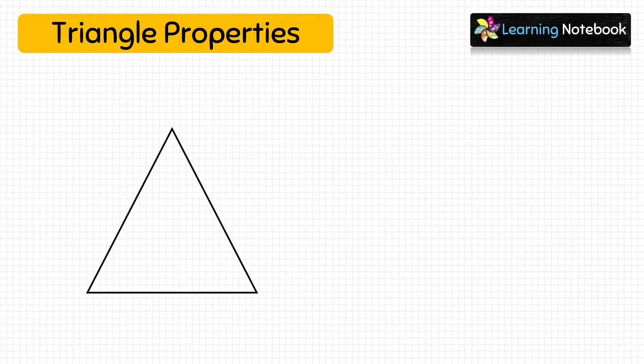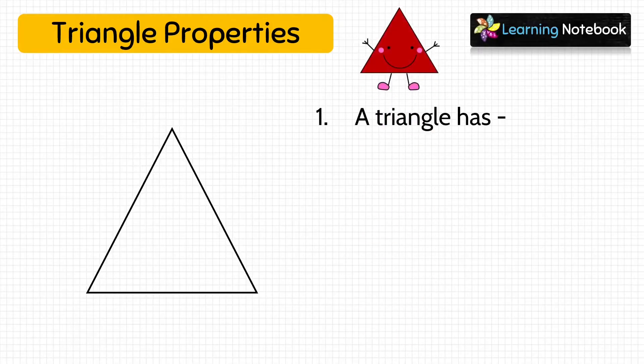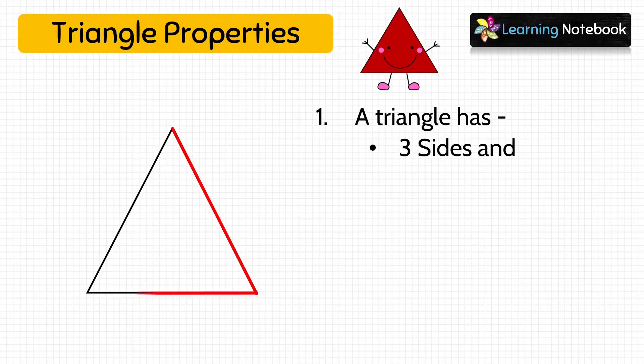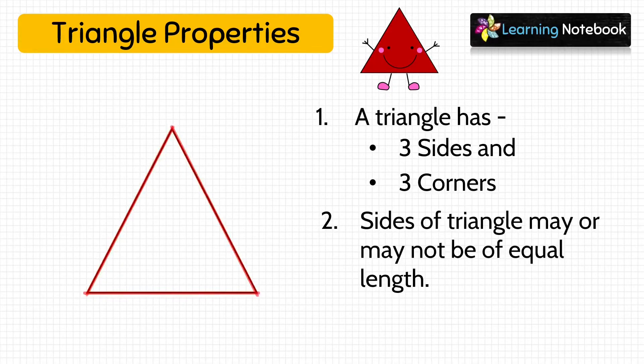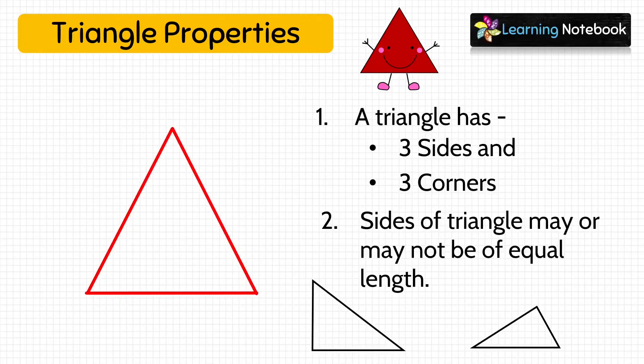The third basic shape is triangle. A triangle has three sides and three corners. Students, remember that sides of a triangle may or may not be of equal length, like these two triangles. Their sides are not of equal length.